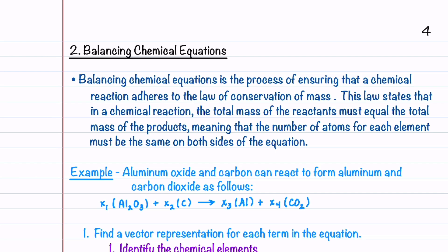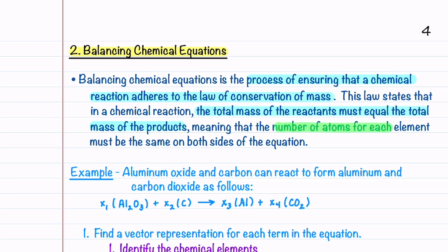The second application of linear systems is balancing chemical equations — the process of ensuring that a chemical reaction adheres to the law of conservation of mass. This law states that in a chemical reaction, the total mass of the reactants must equal the total mass of the products, meaning the number of atoms for each element must be the same on both sides of the equation.